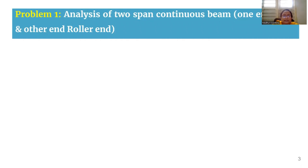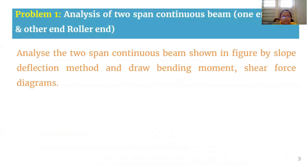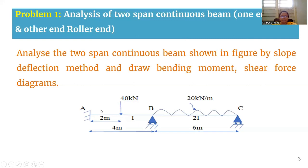We are going to analyze a two-span continuous beam where one end is a fixed support, one is an intermediate support B, and the other end is a roller support C. The question is to analyze the beam using the slope deflection method and draw the bending moment diagram and shear force diagram. Span AB has a 40 kN point load, span BC has a UDL of 20 kN/m, with moment of inertia I for AB and 2I for BC. The span of AB is 4 meters and BC is 6 meters.